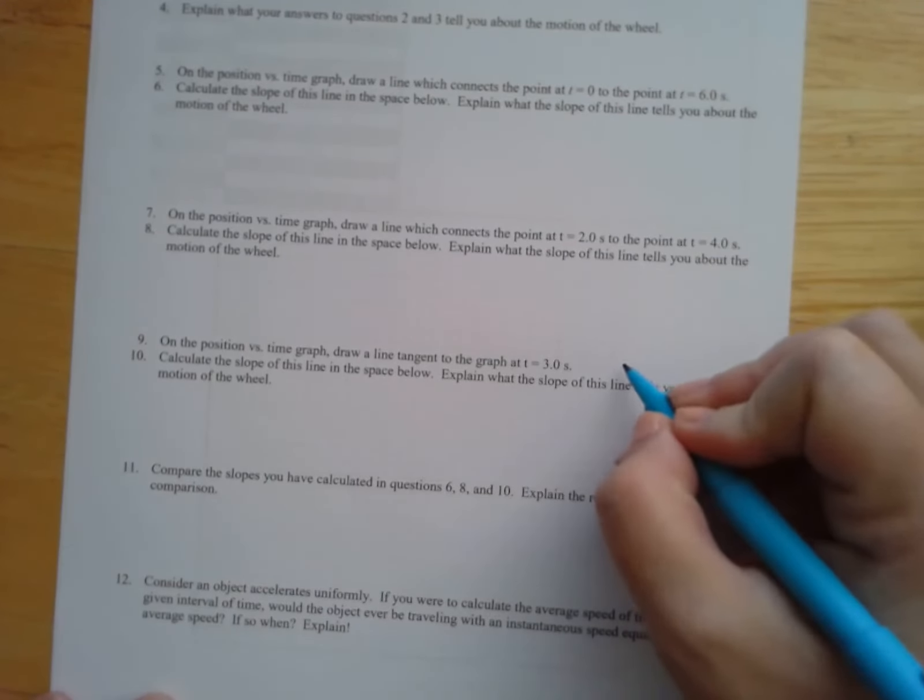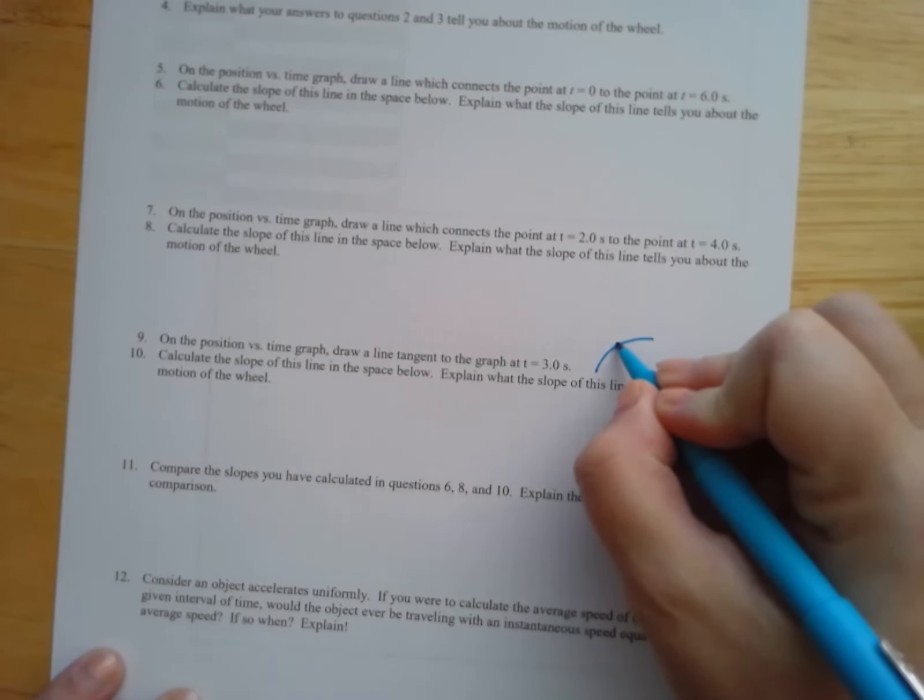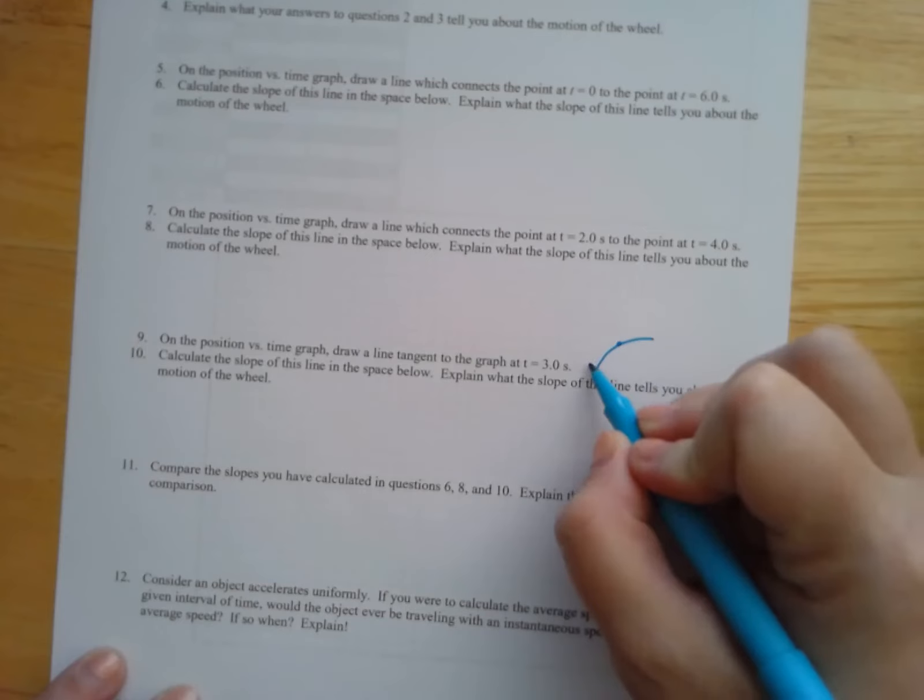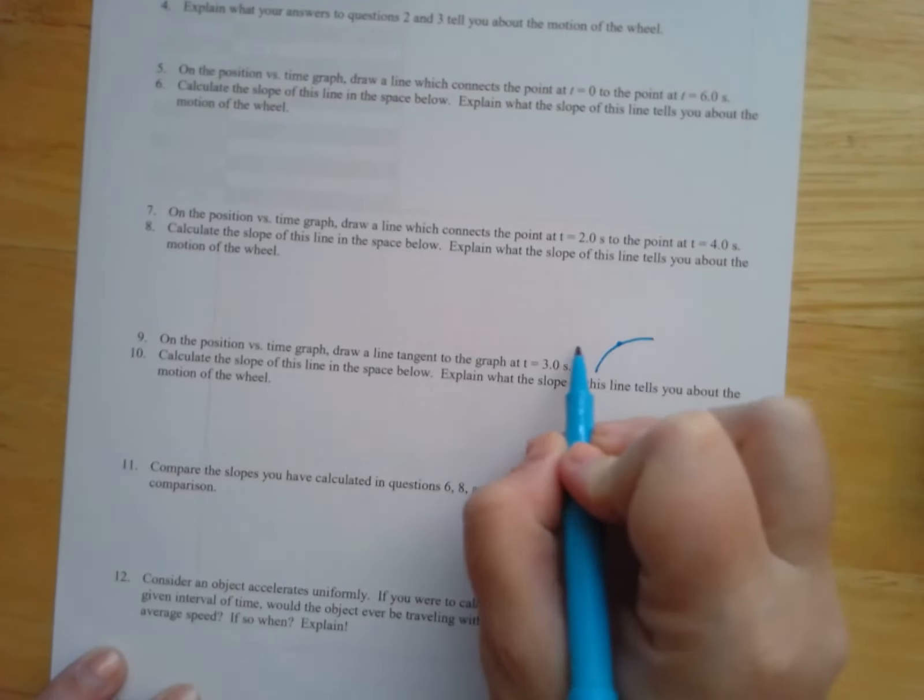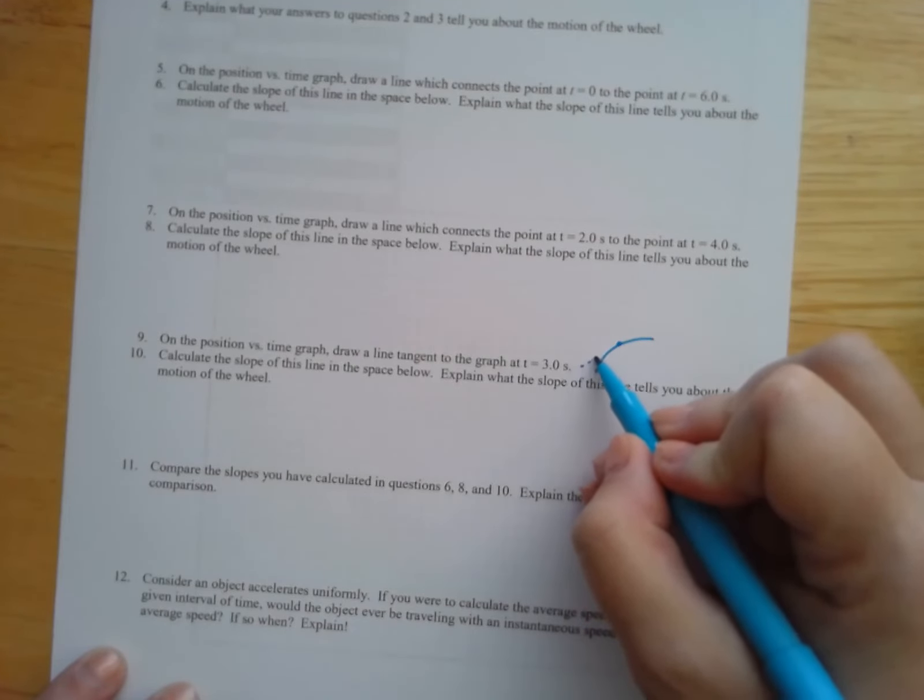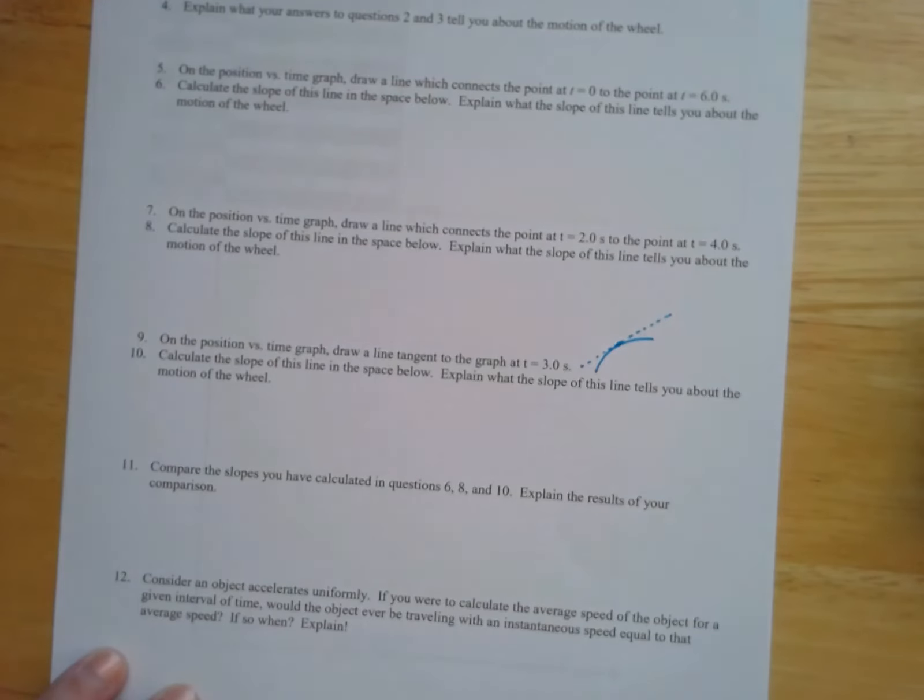In case you aren't sure what tangent means, tangent is when you have a curve. And if you're going to draw a line that's tangent to a curve at a point, you want to draw a line that's not ever going to intersect that curve. So if you drew it horizontally here, it would go through the curve. If you drew a vertical line, it would go through the curve. But if you just draw a line that glances off the curve, that's a tangent line.